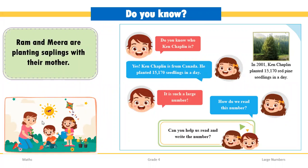Now moving further. Ram and Meera are planting saplings with their mother. Do you know who Ken Chaplin is? Ken Chaplin is from Canada. He planted 10,170 seedlings in Adelaide. In 2001, Ken Chaplin planted 15,170 red pine seedlings in Adelaide. It is such a large number. How do we read this number? We have to start from the last digit.